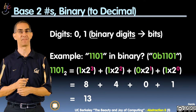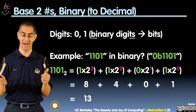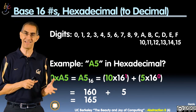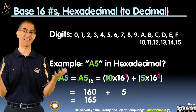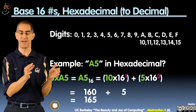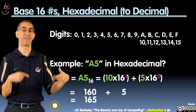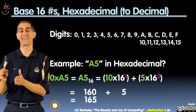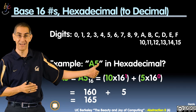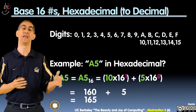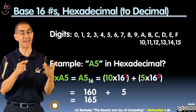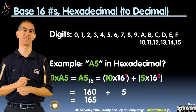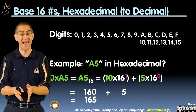So 1101 in binary is thirteen. Now let's go to hexadecimal — base sixteen. Base sixteen is a bit more complicated because we only have ten decimal digits, but hexadecimal has sixteen. So we use letters: once you get to ten, you go to A. Ten in hexadecimal is A, eleven is B, all the way up to F, which is fifteen. So it's zero through fifteen in one hexadecimal digit.